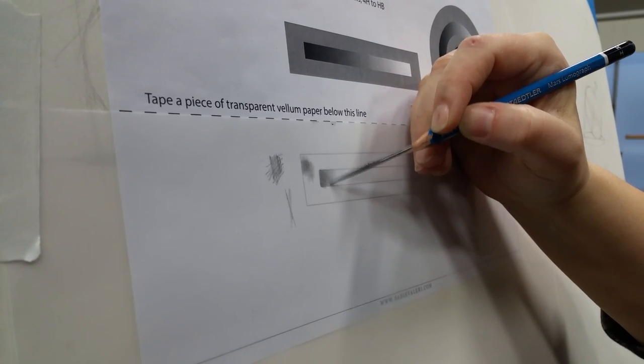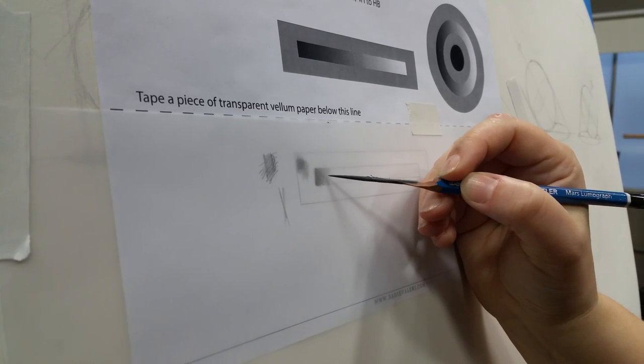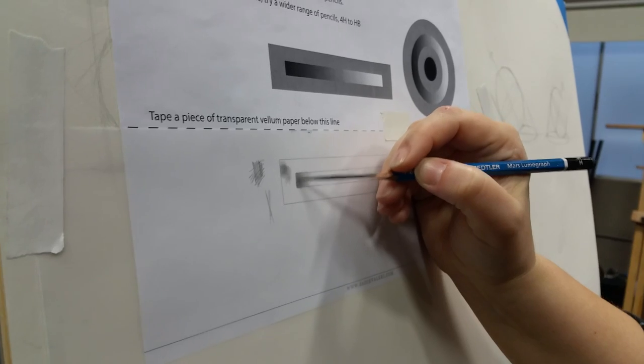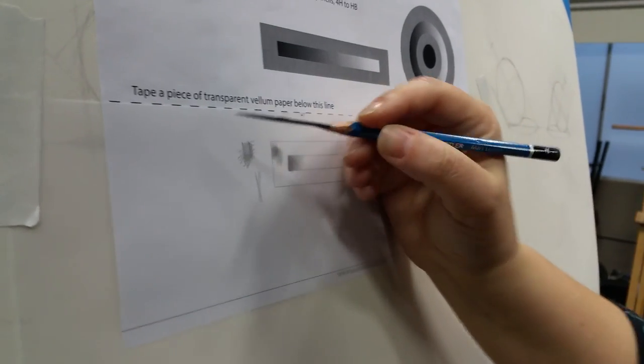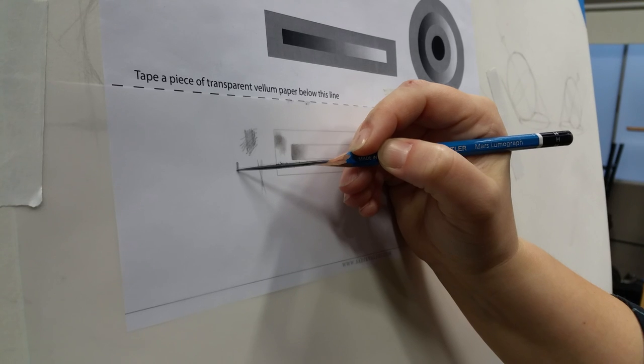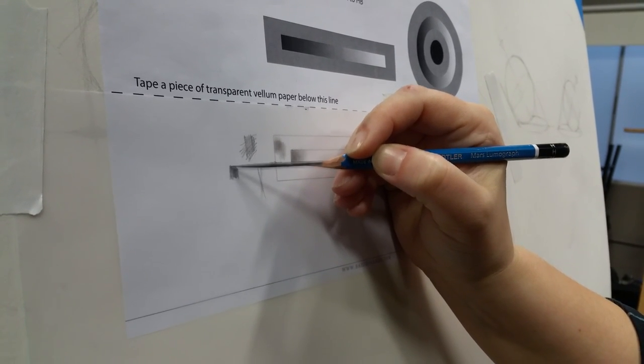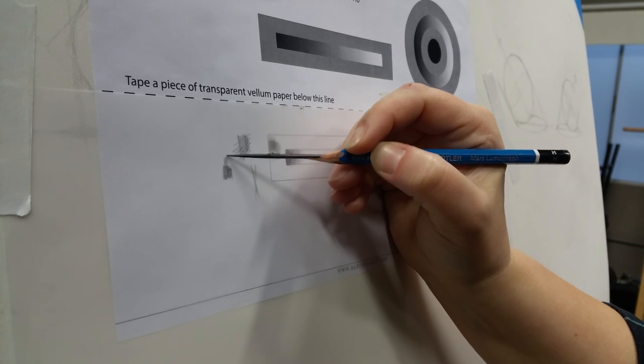And you can see I'm keeping a soft leading edge. This is what I call the leading edge. Because this is the direction I'm shading. I'm keeping it blurry and soft. Because if I have a shaded area that has hard edges, and then I do another shading area next to it, what happens is I get this seam right there.